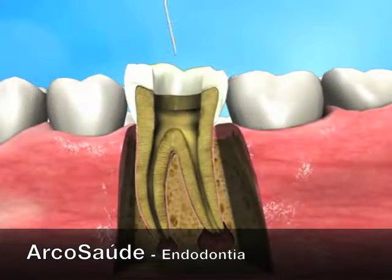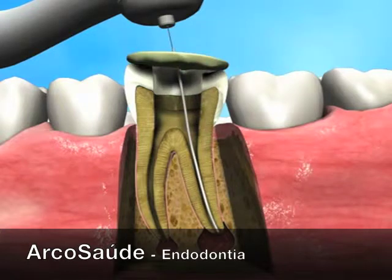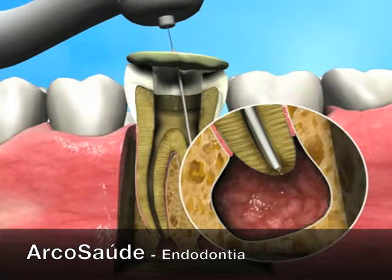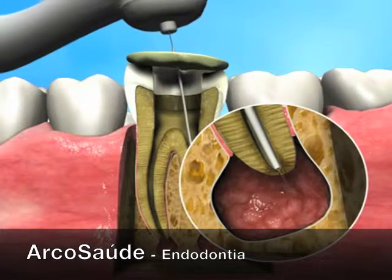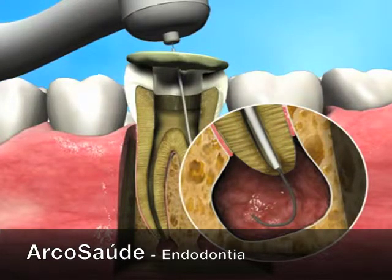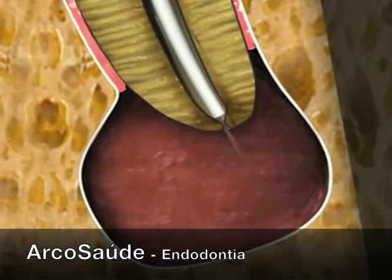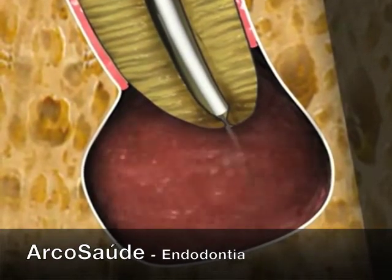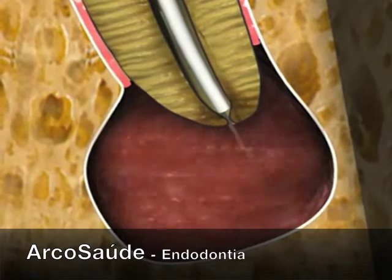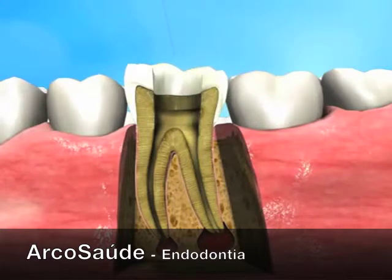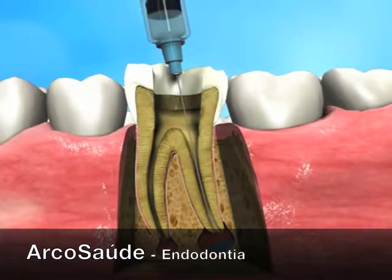First, the Apexin coarse ablator is inserted through the canal, up to the previously created apical stop. The Apexin coarse ablator consists of a blade made of shape-memory nickel-titanium, encased in a nickel-titanium sheath. When extruded through the sheath and into the lesion, it assumes its predetermined retrograde shape. The Apexin coarse ablator is then rotated at 250 rpm for about 30 seconds to roughly grind the lesion tissue. A first rinse with saline using one of the provided irrigation needles is then performed.